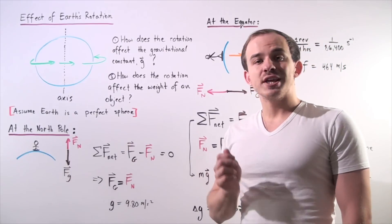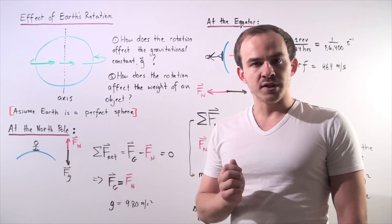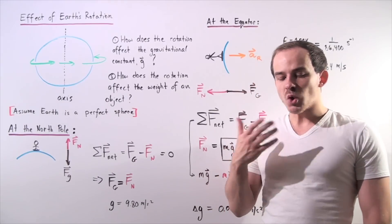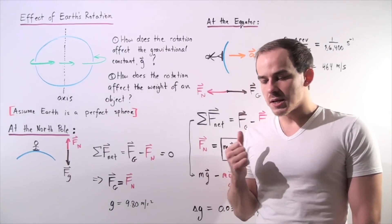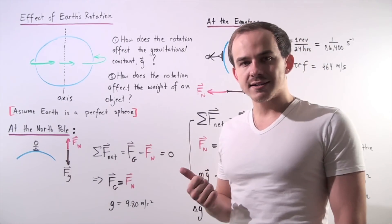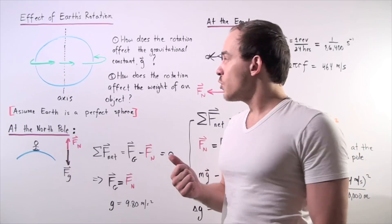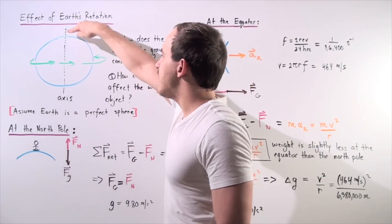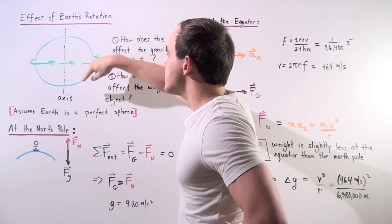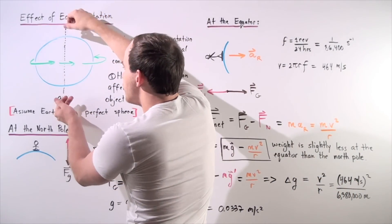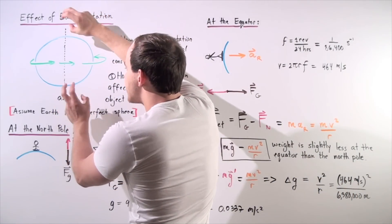Recall that the Earth is not perfectly still. In fact, it rotates with some velocity about an axis. So here we have the Earth, here we have the axis, and the Earth rotates about this axis.